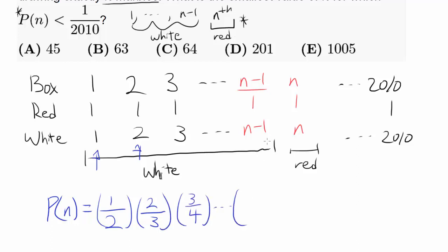For the nth marble, you want to get red. There's only 1 red out of n+1 marbles. So you have this product being equal to P(n), and you want this to be less than 1 over 2010.